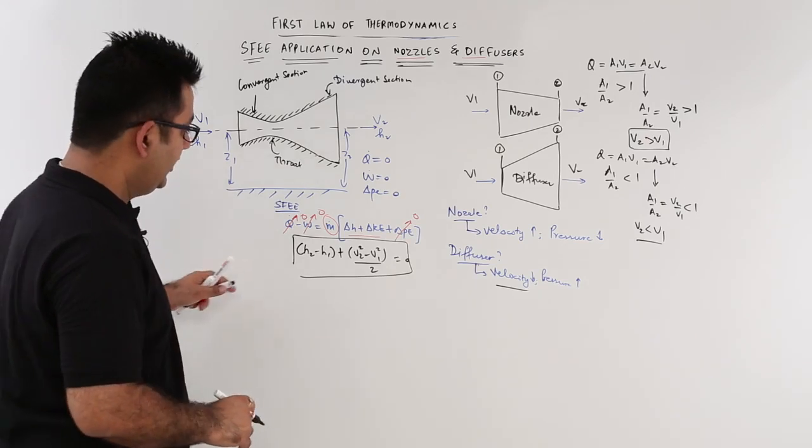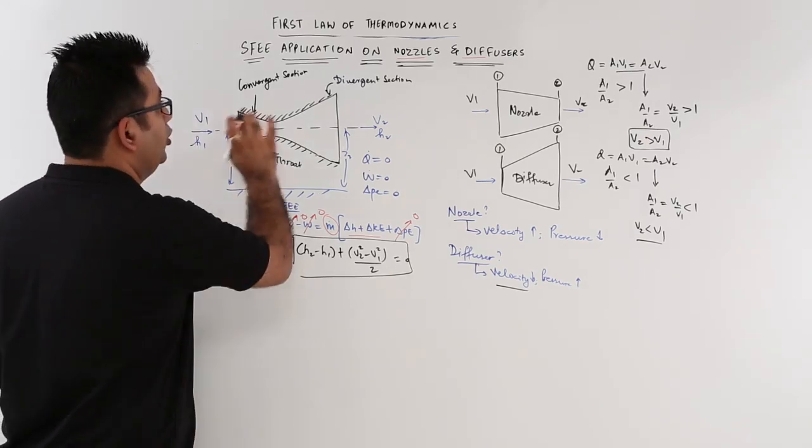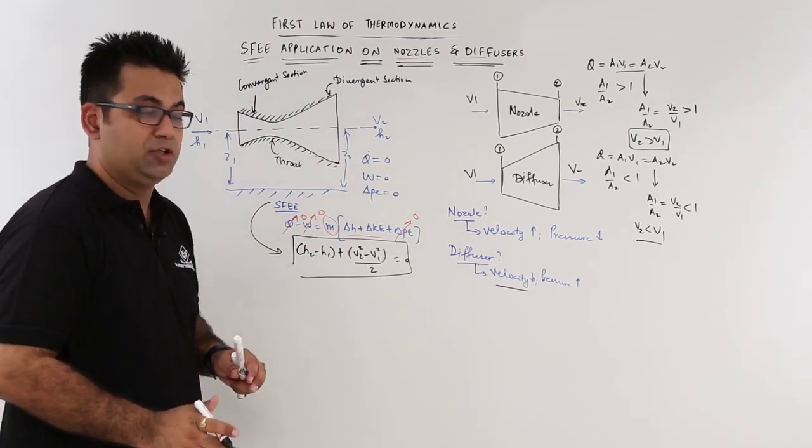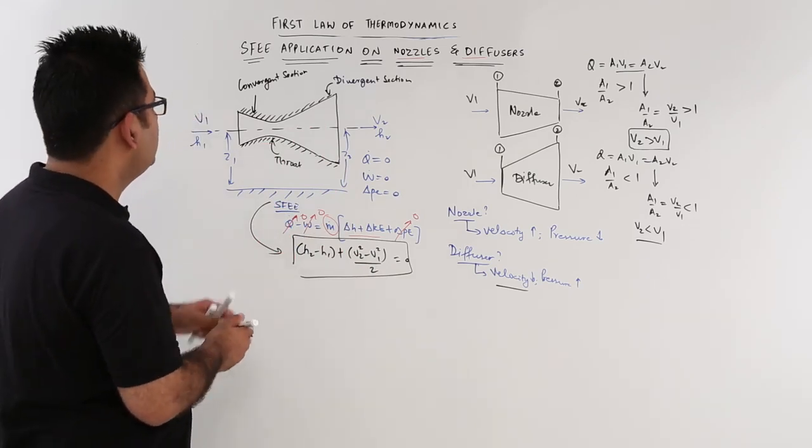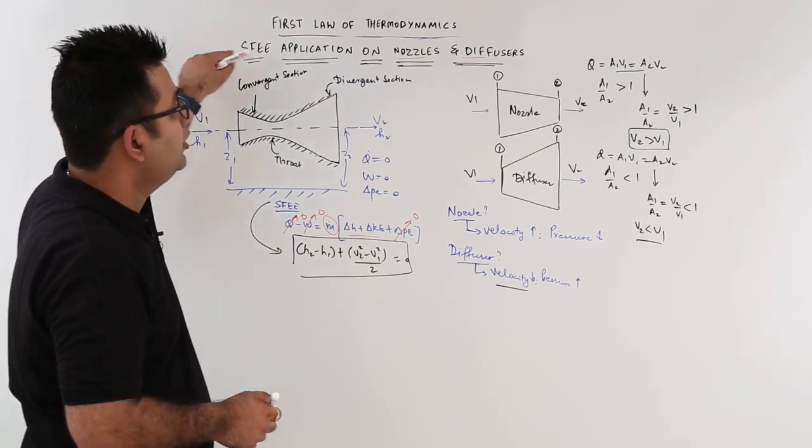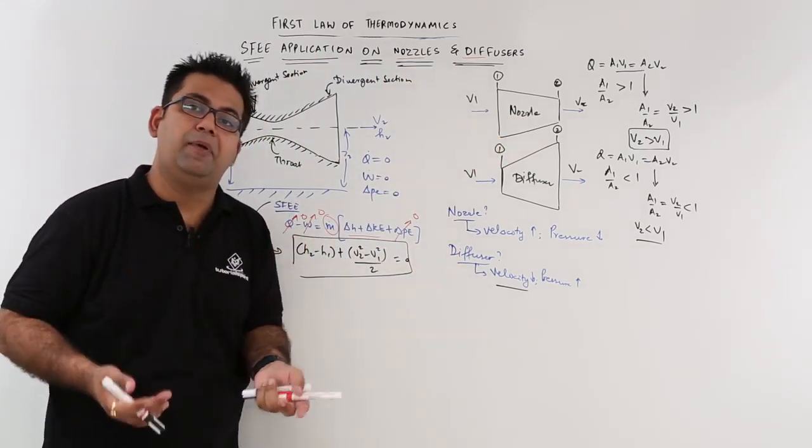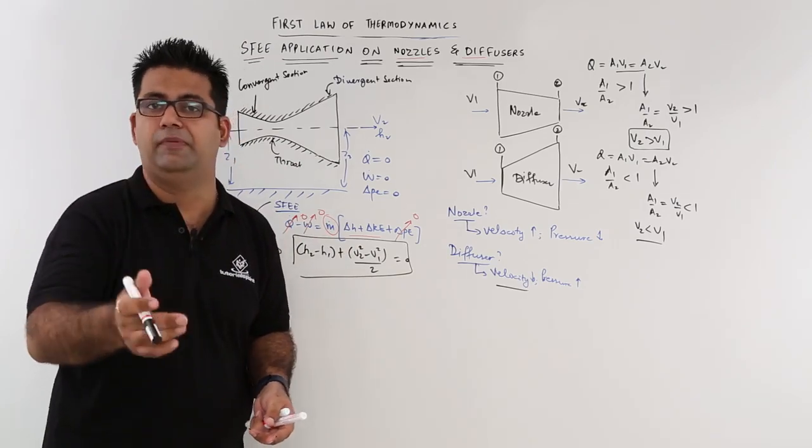So this is the equation that we call the SFEE for a nozzle or a diffuser. And this is how we derive it. So I hope you understood this analysis on the application of steady flow equation on a nozzle and a diffuser. Now, let's move on to the second application of SFEE and talk about gas turbines and steam turbines.